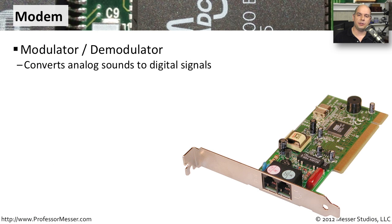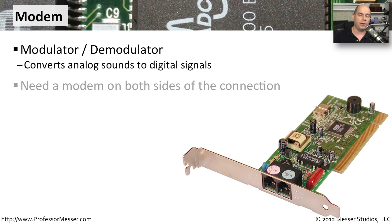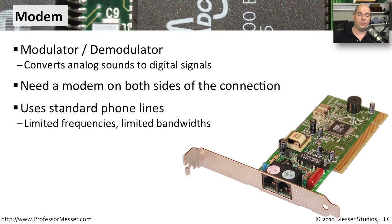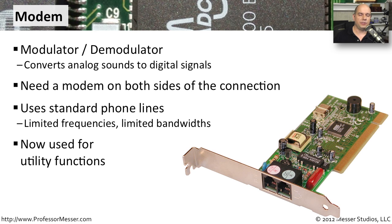Another network device you'll commonly see is a modem — that stands for modulator/demodulator. It's a way to take digital signals and send them via audio across a connection, sometimes a phone line or a leased line from a network provider. You'll need a modem on both sides to make that work. It's common for remote sites with no high-speed connectivity where small amounts of data need to be transferred. Since we have so many high-speed internet choices today, individuals don't commonly use modems, but they remain useful for utility functions like automated end-of-day file transfers.